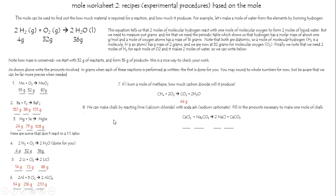Number eight. We can make chalk by reacting lime, which is calcium chloride right there, also known as road salt, with soda ash. That's sodium carbonate, not sodium bicarbonate. That would be NaHCO3. It'll make some salt and some calcium carbonate. Fill in the amounts necessary. We just got to add them up, right? So add them up,